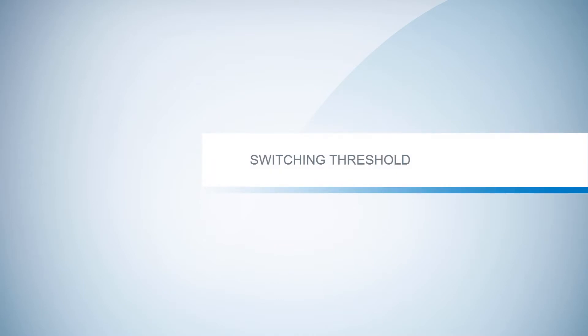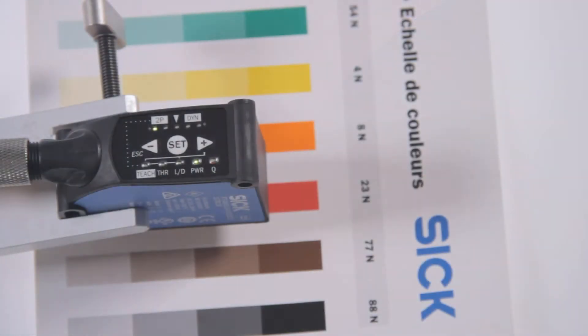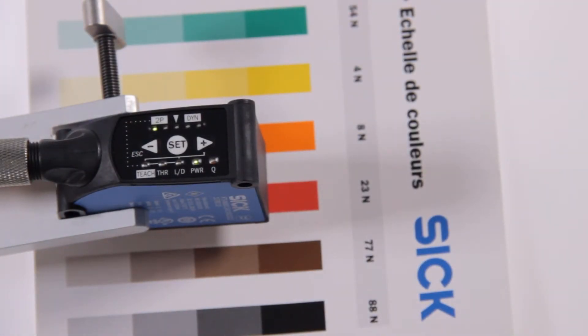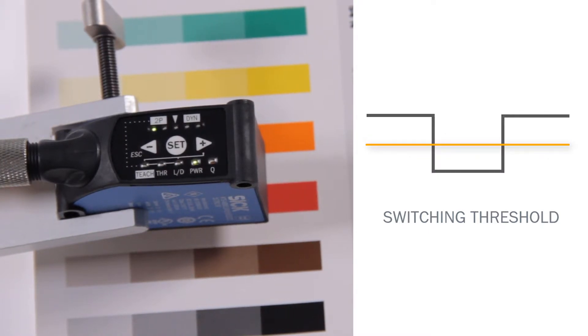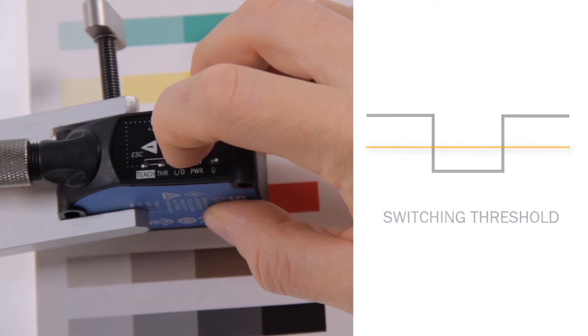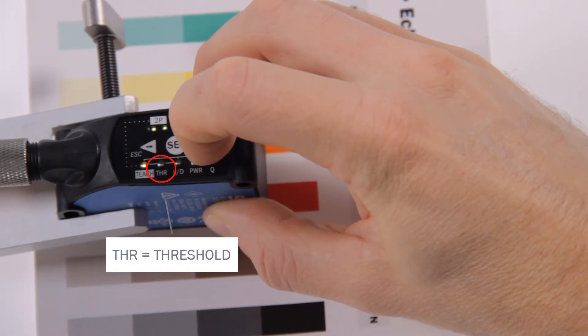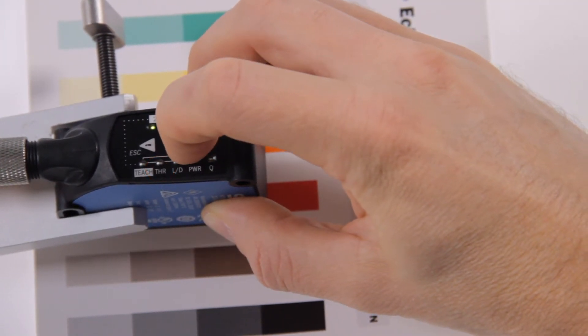Switching threshold. The switching threshold is set automatically after the teach-in and represents a switching threshold of 50%. This value can be adjusted by moving the yellow LED indicator with the plus and minus buttons to THR for threshold. Confirm with SET.